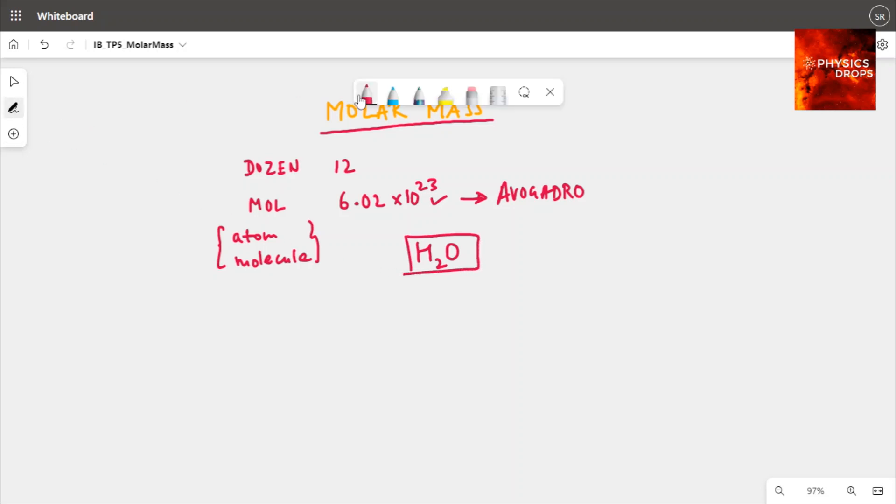Now we need to understand one difference clearly here. When I say molar mass of an atom, let's say oxygen atom, it would mean the mass of 6.02 times 10 power 23 oxygen atoms.